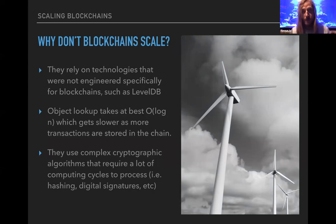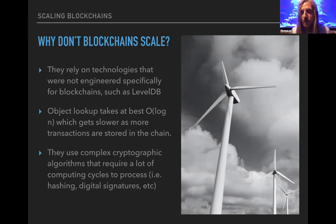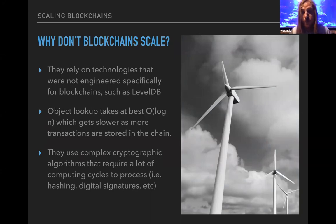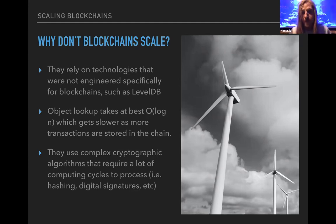Bitcoin upgrading from Berkeley database to Google's LevelDB brought significant improvements, because it's not just about the size of the blockchain or the data — it's how you sort and structure that data, which determines lookup complexity. Blockchains are very read-intensive, especially when dealing with virtual machines where states need to be retrieved from disk. This increases overall time and decreases throughput. Object lookup takes at best O(log n), which gets slower as more transactions are stored in the chain.